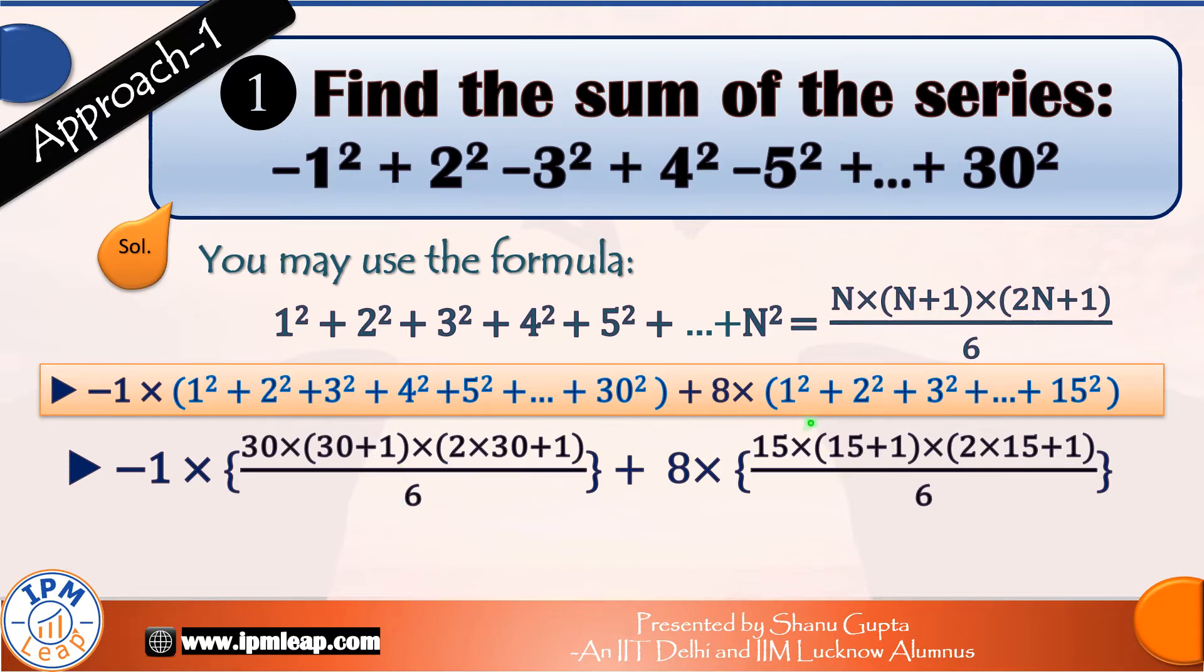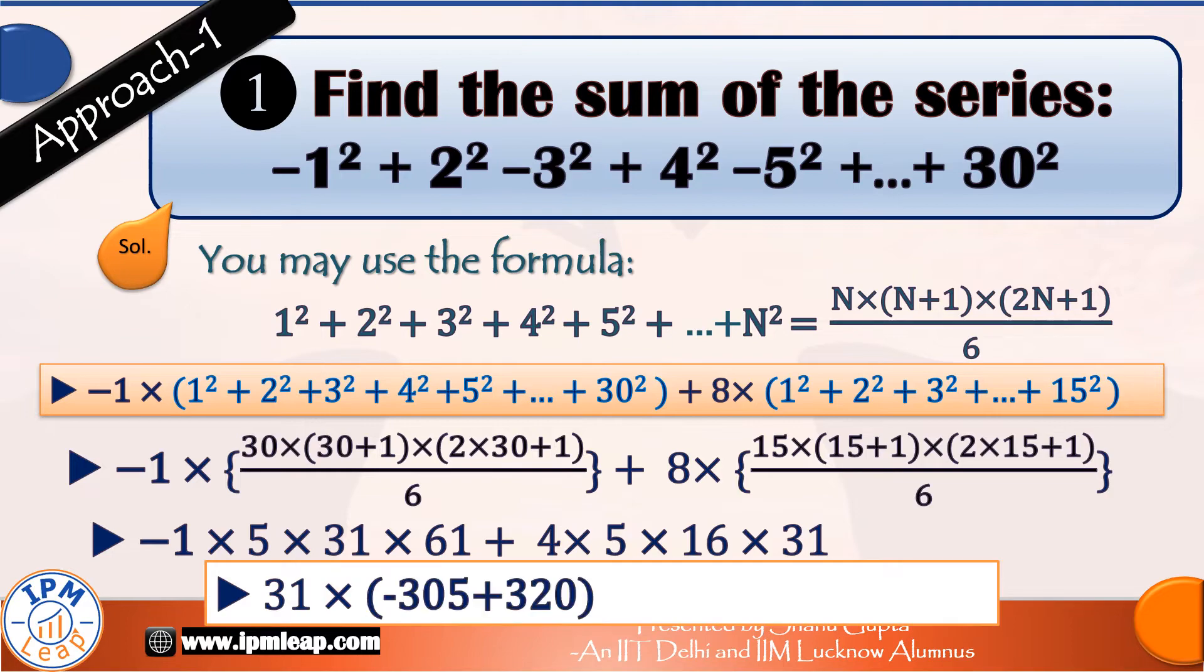For the second series, n is equal to 15. So applying the formula, sum of first 15 squares is equal to 15 into 15 plus 1 into 2 into 15 plus 1 upon 6. We may do some simplification for these numbers. Take 31 common and this expression evaluates to 465.